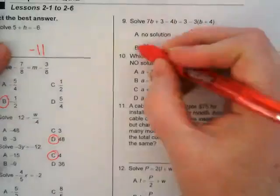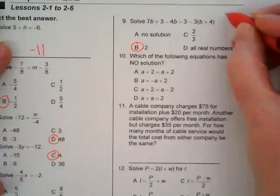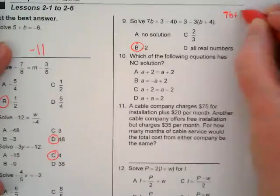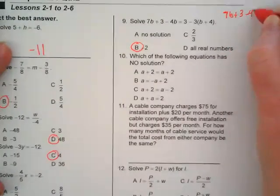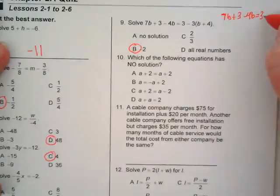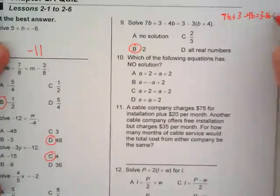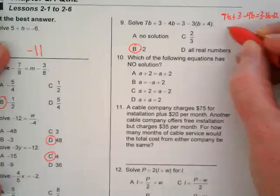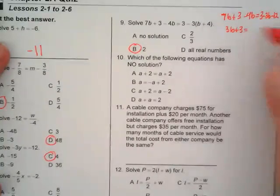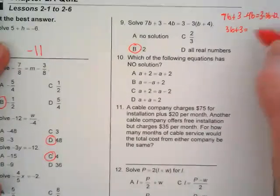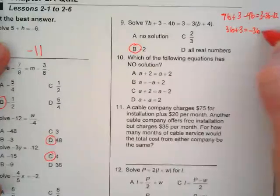Number nine is B. This would be 7b plus 3 minus 4b equals 3 minus 3b minus 12. 7b and negative 4b is going to be 3b plus 3 equals 3 minus 12 is going to be negative 3b minus 9.